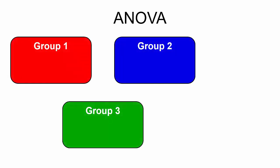In this example, we have three groups. The members of each group will be given a set of instructions and asked to assemble the ABLE chair. The participants in Group 1 were given text-only instructions, those in Group 2 were given text instructions with illustrations, and the members of Group 3 were given an instructional video demonstrating how to assemble the chair.